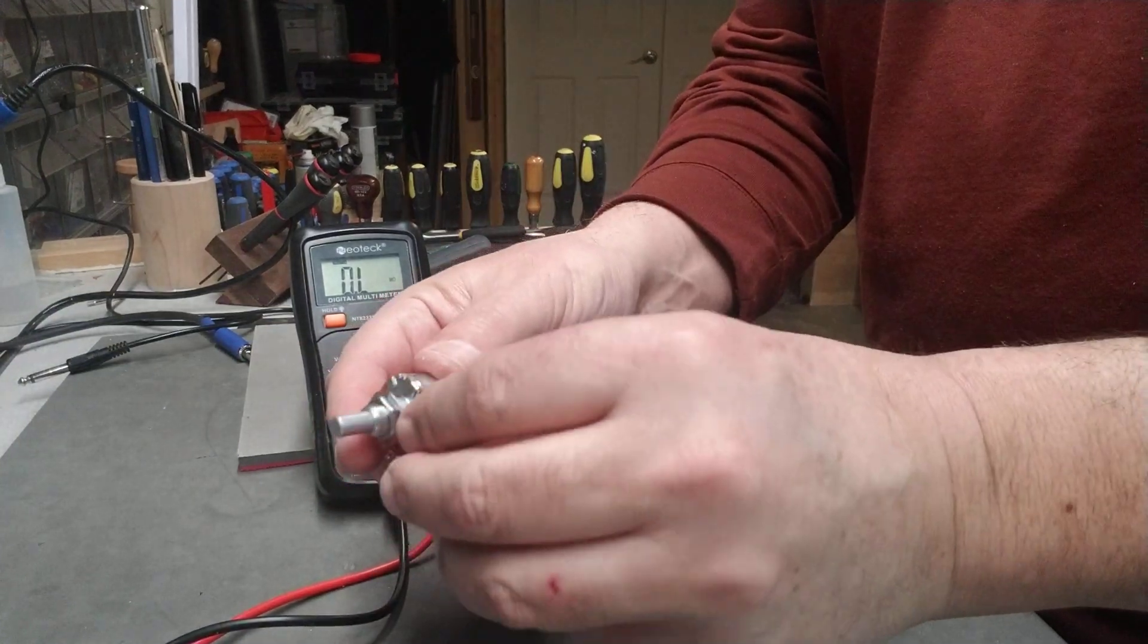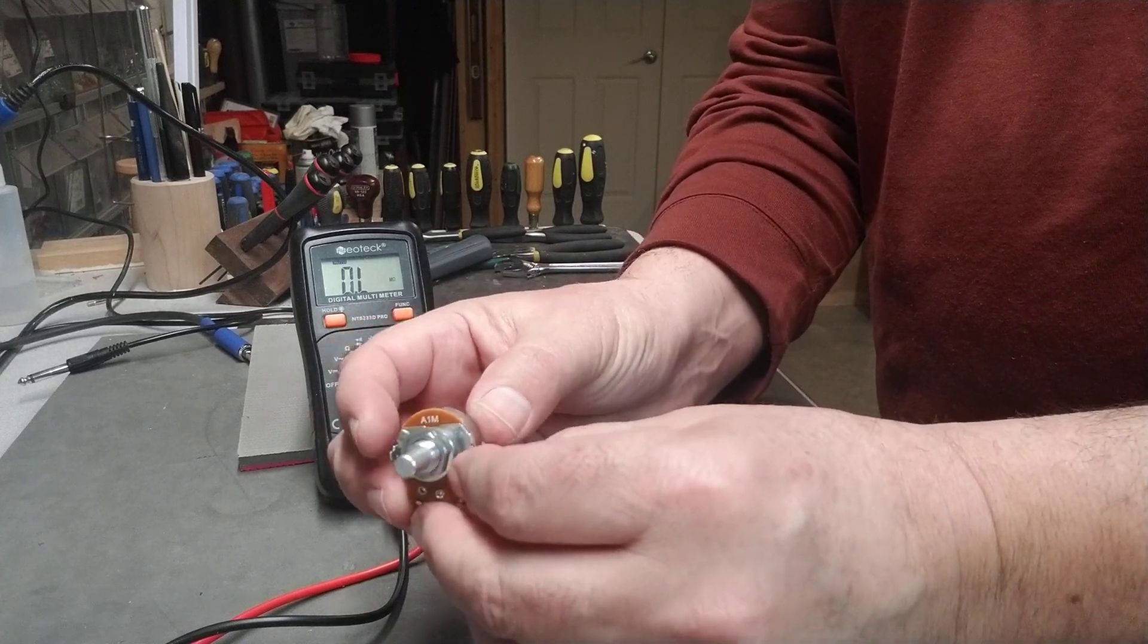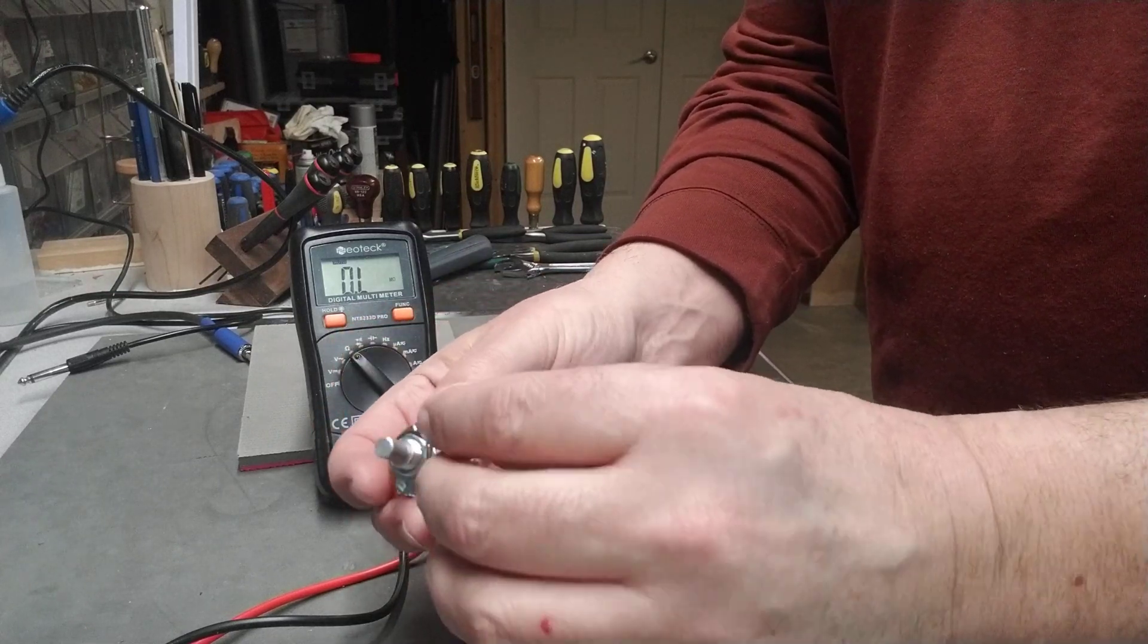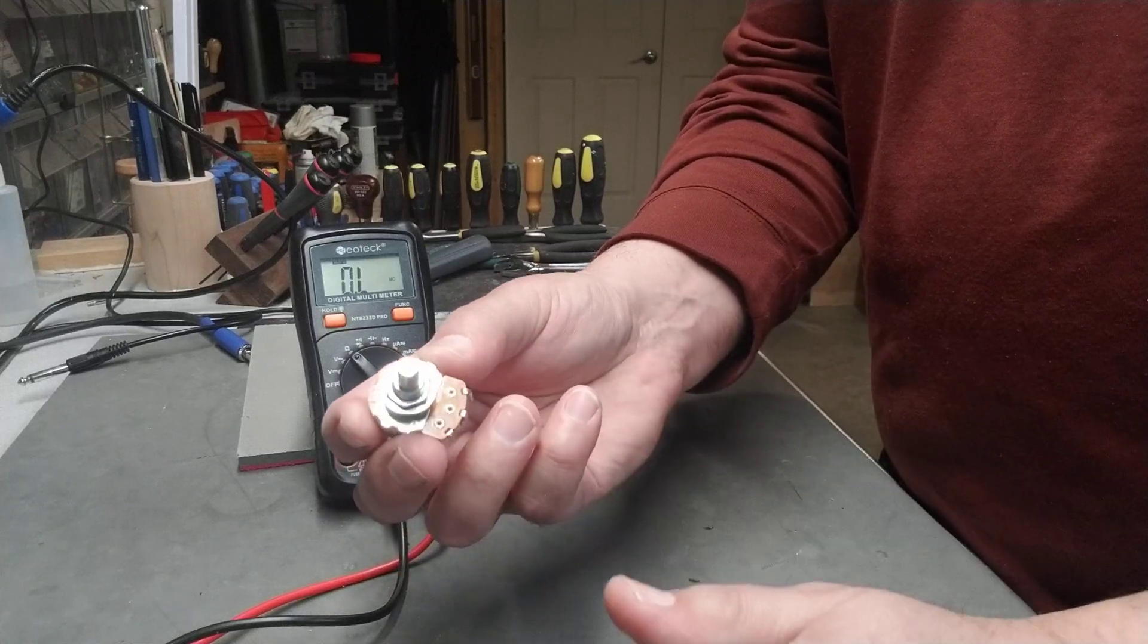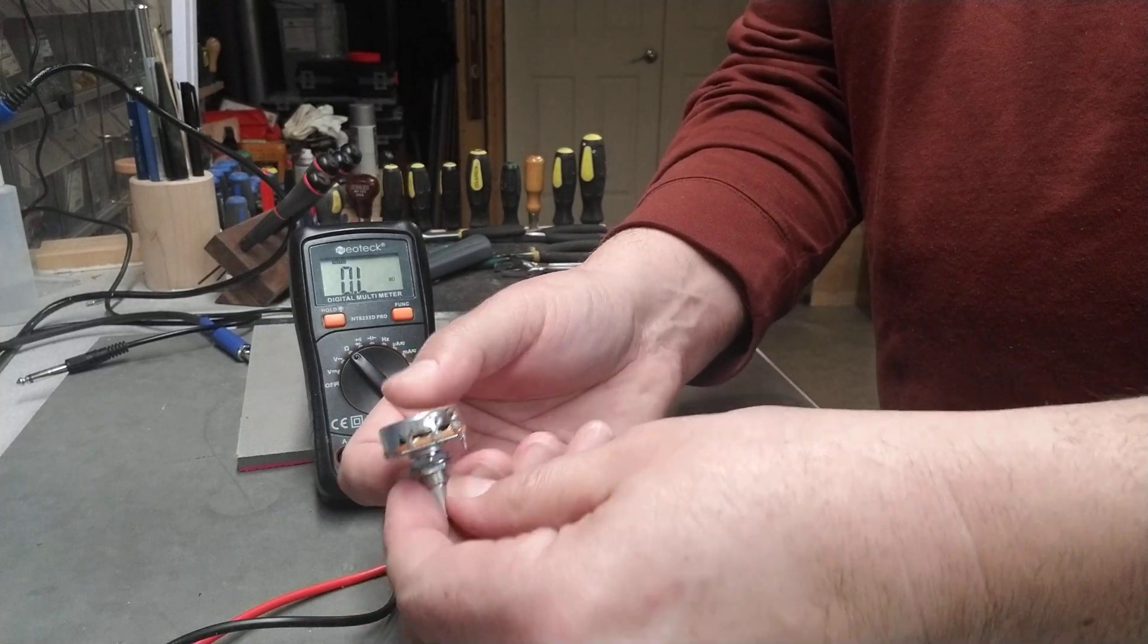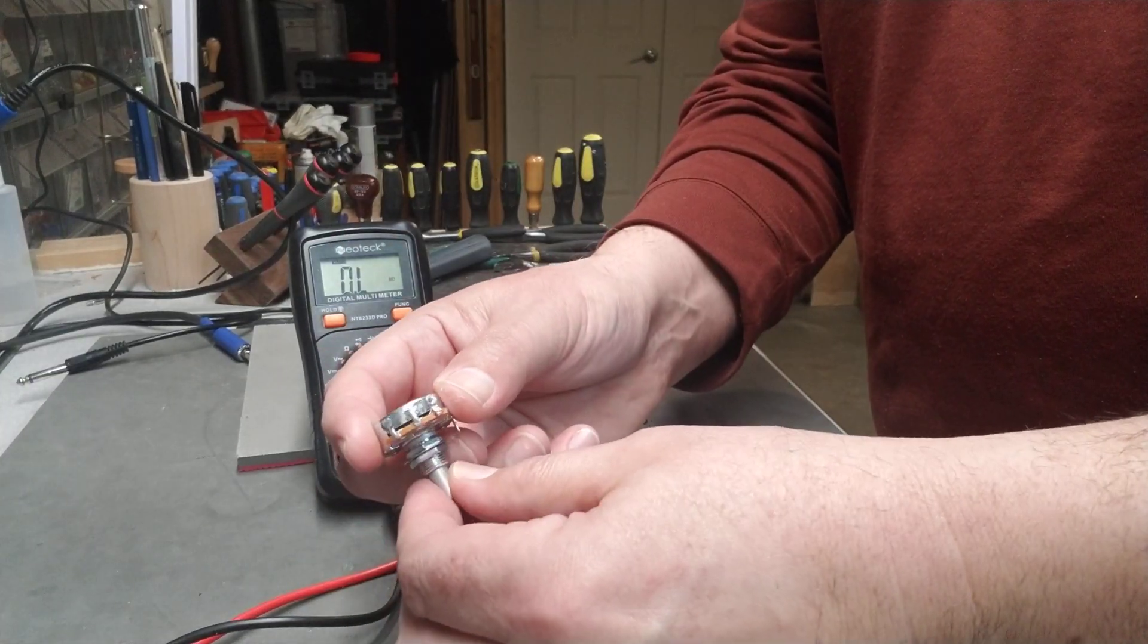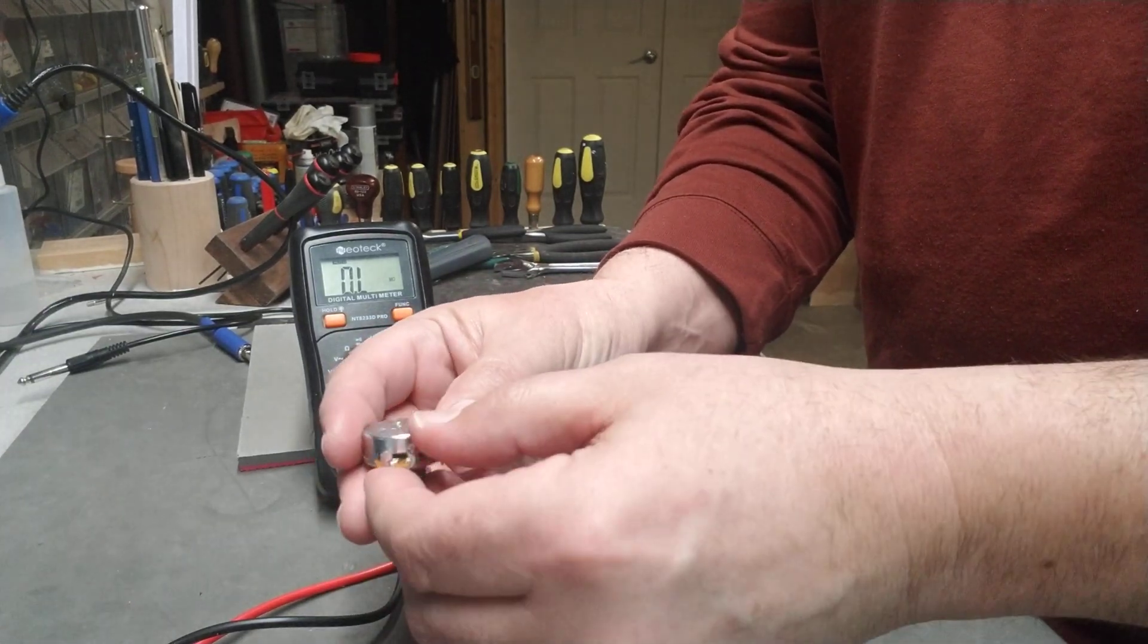But this is the pot that was giving me problems. It's actually a 1 meg pot, an Alpha 1 meg. And for some reason the volume, it would go all the way up but it wouldn't turn off. So when I went all the way down it would still let some signal through. So I figured out that it's probably the pot, right?